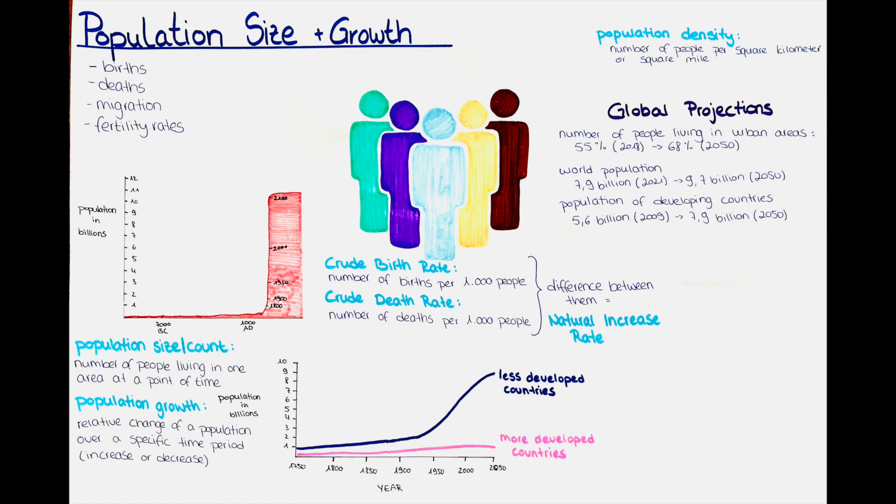Population density is a key factor in determining the social, economic and environmental well-being of a particular area. High population densities can lead to issues such as traffic congestion, pollution and overcrowding, while low population densities can result in a lack of economic development and infrastructure. Additionally, population density can influence the spread of infectious diseases and the accessibility of healthcare services.